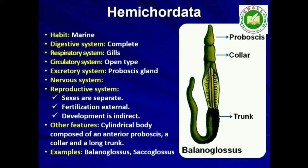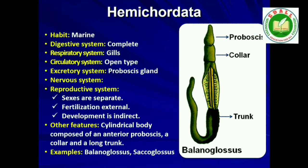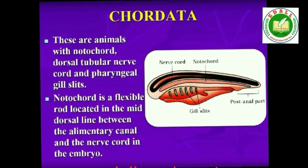Tenth: Phylum Hemichordata. Hemichordata was earlier considered as a subphylum under Phylum Chordata, but now it is placed as a separate phylum under non-chordata. This phylum consists of a small group of worm-like marine animals with organ system level of organization. They are bilaterally symmetrical, triploblastic and coelomate animals. The body is cylindrical and is composed of an anterior proboscis, a collar and a long trunk. Circulatory system is of open type. Respiration takes place through gills. Excretory organ is the proboscis gland. Sexes are separate; fertilization is external; development is indirect. Examples: Balanoglossus and Saccoglossus.